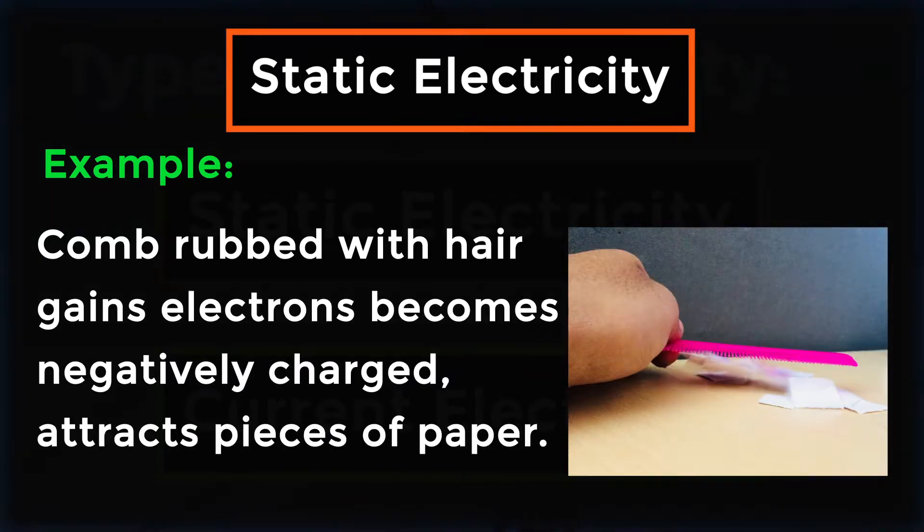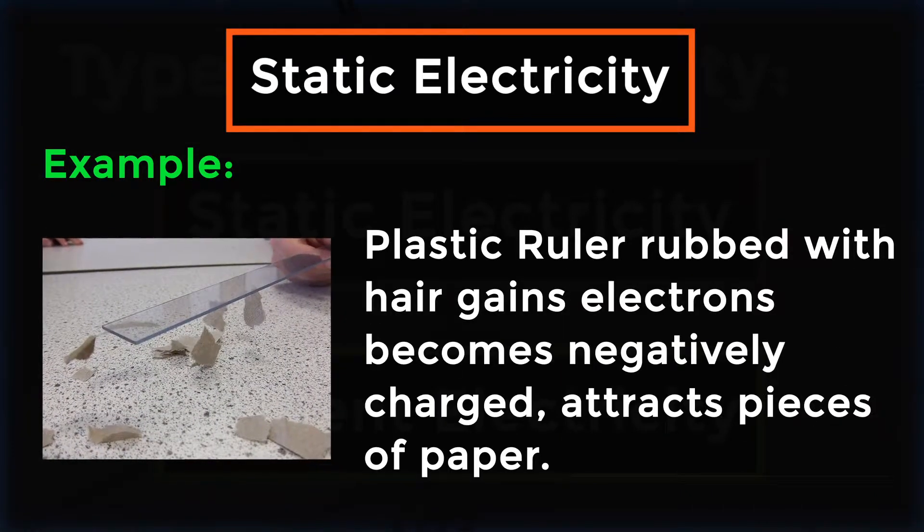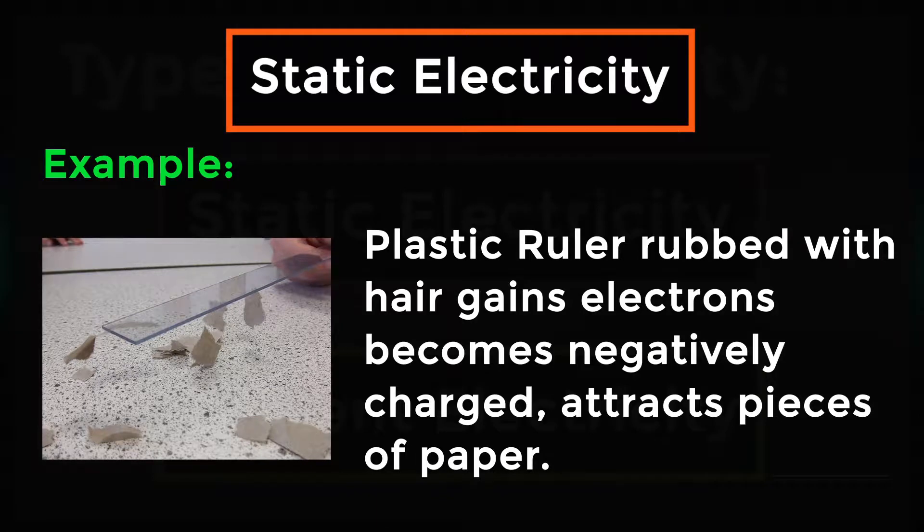Examples: a comb rubbed with hair gains electrons, becomes negatively charged, and attracts pieces of paper. A plastic ruler rubbed with hair gains electrons, becomes negatively charged, and attracts pieces of paper.